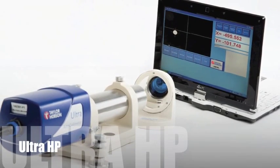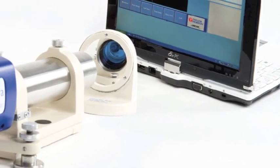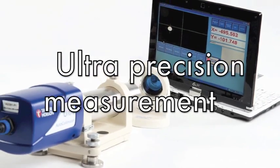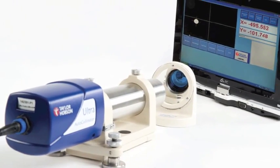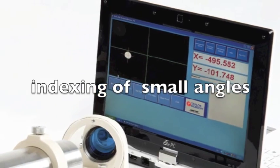The jewel in the crown is the ultra HP autocollimator. With its high precision ultra stable performance, it's ideal for the measurement of indexing of small angles.